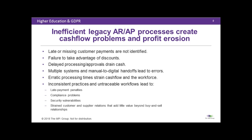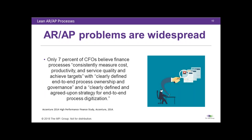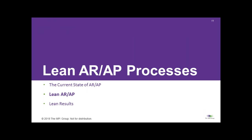This isn't a problem just for some companies or some manufacturers. These are problems across the board. There's a great quote from an Accenture study: only 7% of chief financial officers believe that their finance processes consistently measure cost, productivity, and service quality and achieve their targets. That means 93% believe they've got errors there — and the research confirms they're correct. So what would it mean to take these legacy processes that are costing manufacturing companies money and make them lean?